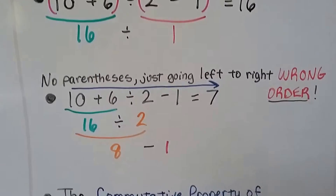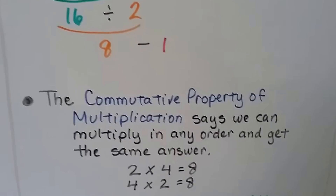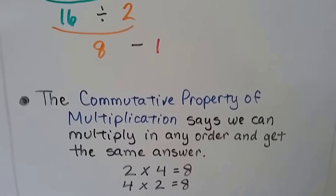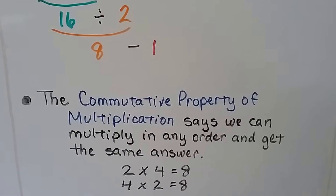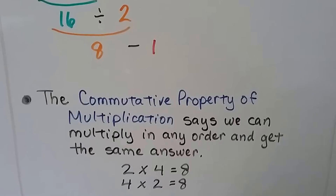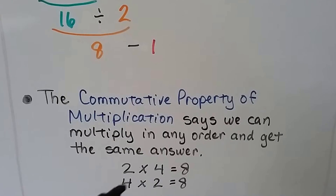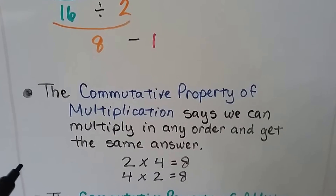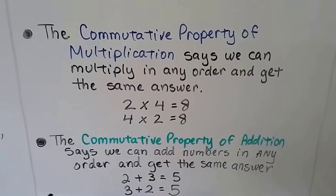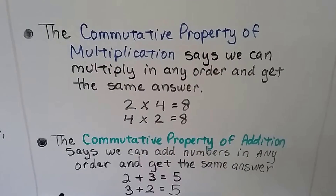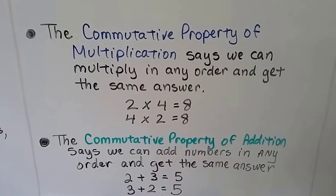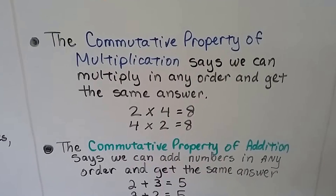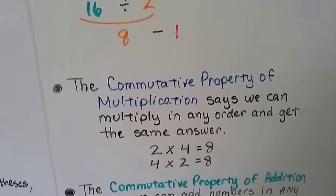The commutative property of multiplication says we can multiply in any order and get the same answer: 2 times 4 equals 8 and 4 times 2 equals 8. The commutative property of addition says we can add numbers in any order and get the same answer: 2 plus 3 is 5, and 3 plus 2 is 5. So we can switch them around to make our life easy.